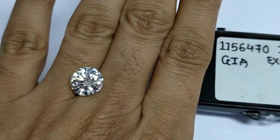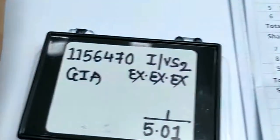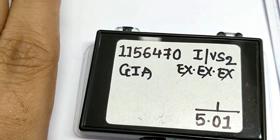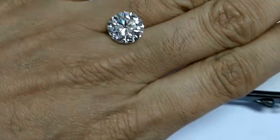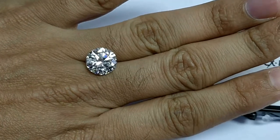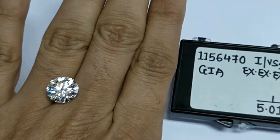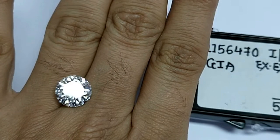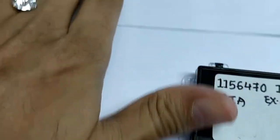In this brief video, I'm going to discuss a 5 carat I color VS2 clarity diamond. This is a round shape certified by GIA. This is how big it looks - it has approximately 11 millimeter diameter.